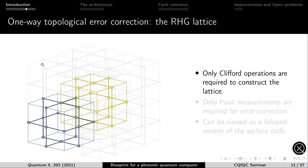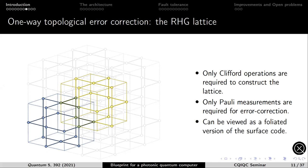The cluster state used in this architectural proposal is the so-called RHG lattice. It's a 3D cluster state suitable for measurement-based quantum computation. It's advantageous because only Clifford operations are required to construct the lattice, and only Pauli measurements are required to perform error correction. For those familiar with the surface code, this can be viewed as the foliated or measurement-based version of the surface code, and many of its error correction properties are inherited by this cluster state.